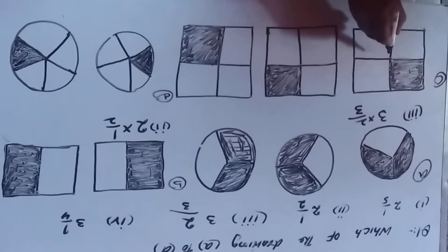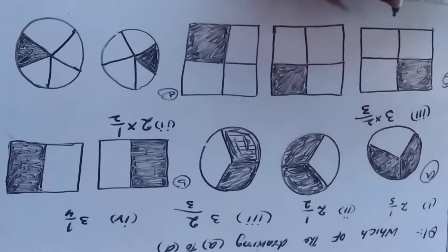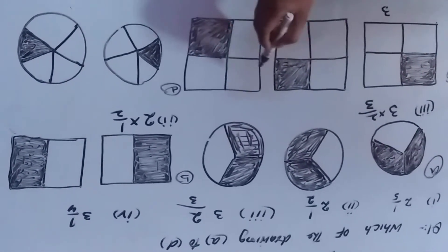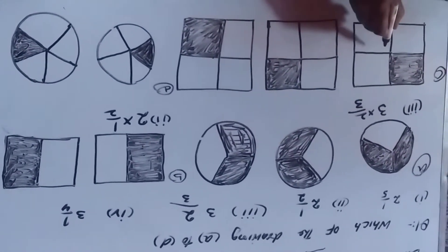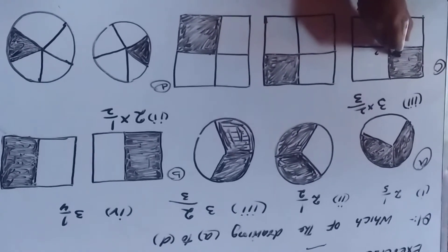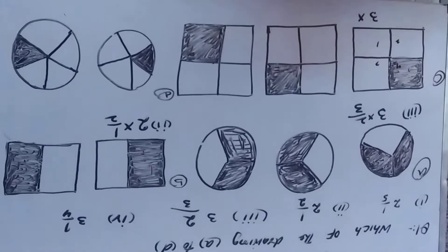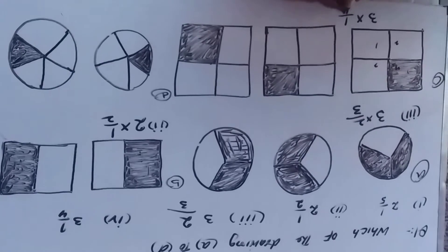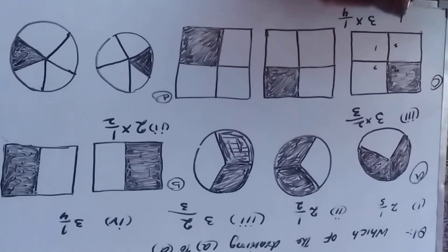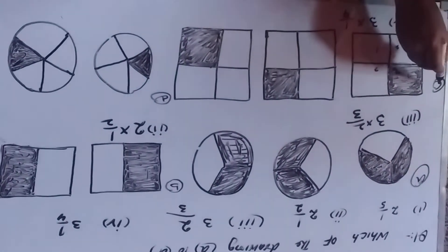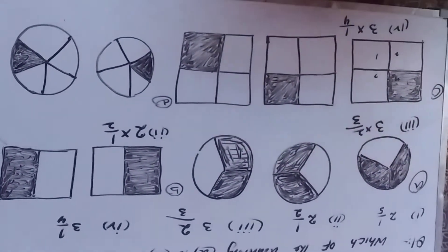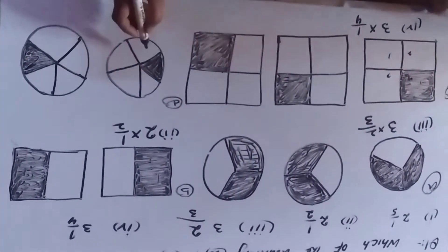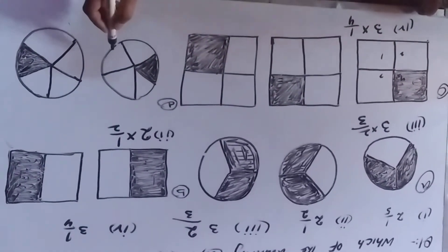We have seen how many square parts there are: one, two, three, and three. Now we have seen how many square parts are multiplied by one, two, three, and four. This is part four — this is the answer. This is part D.